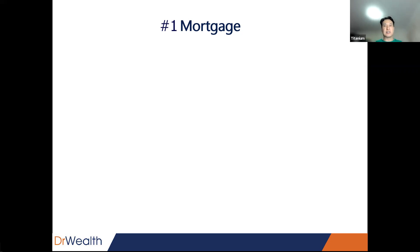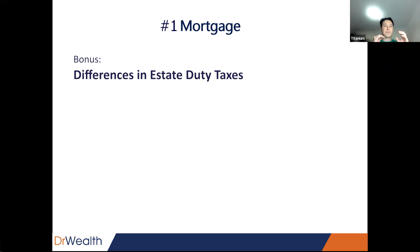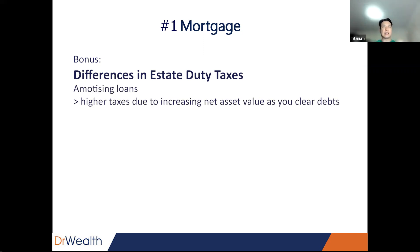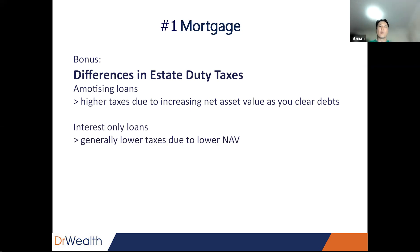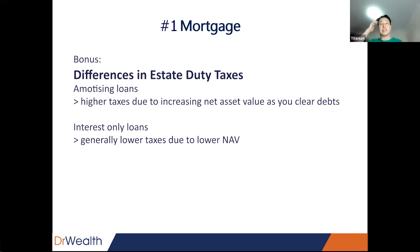Some countries have estate duty taxes. In an amortizing loan where you pay down the loan, the net asset can be quite large, so there is more to tax on. Whereas with an interest-only loan, the debt remains the same and the asset value goes up, so the net asset is often less. And if you refinance periodically to take up money to expand your portfolio, the taxable amount is even lower.